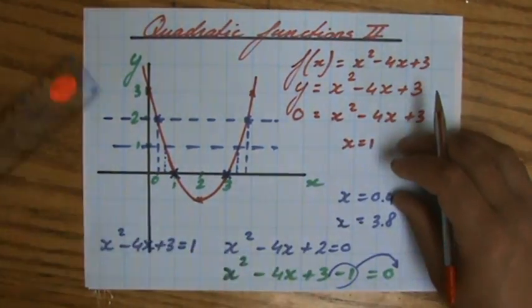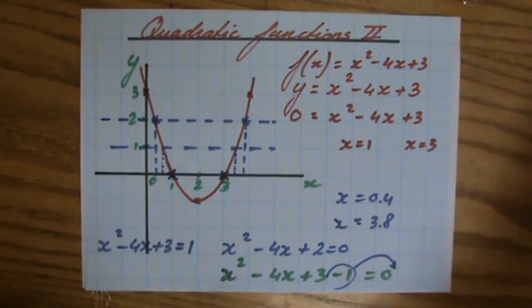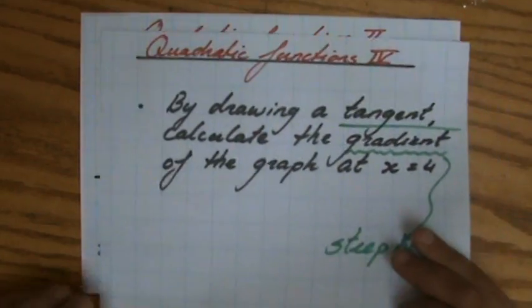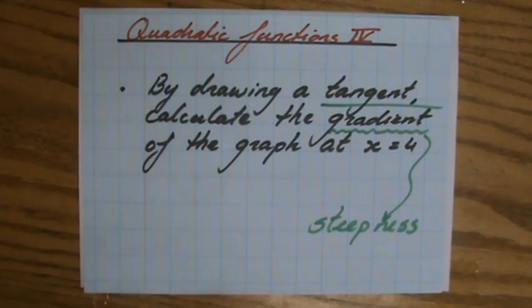So anyway, I'm trying to show you that it's changing all the time. So to calculate the gradient, what do we have to do? We have to draw a tangent. We have to calculate or to find the gradient of a curve. We have to draw a tangent.